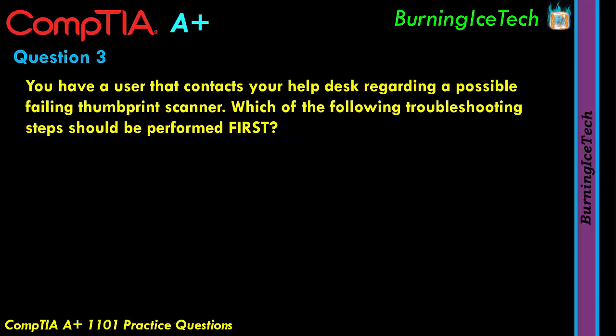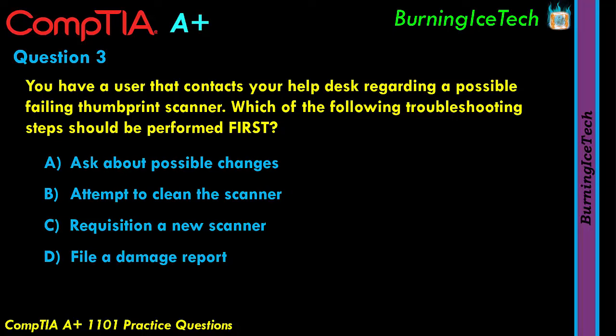Let's move on to question three. You have a user that contacts your help desk regarding a possible failing thumbprint scanner. Which of the following troubleshooting steps should be performed FIRST? Whenever you see something in capital letters, you need to pay special attention — that's very important. So we know the user has a thumbprint scanner that used to work and has stopped. What troubleshooting steps should you perform first? Looking at answer A: ask about possible changes. That doesn't sound like a bad idea — it won't cost any money, and it's a good first step.